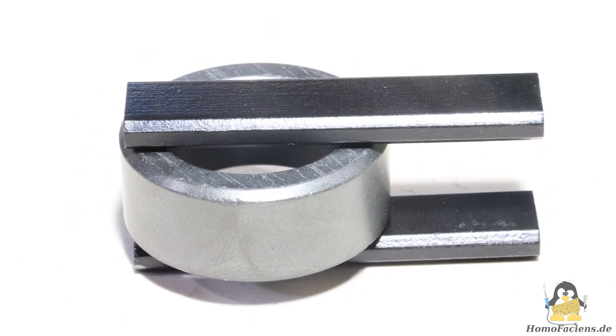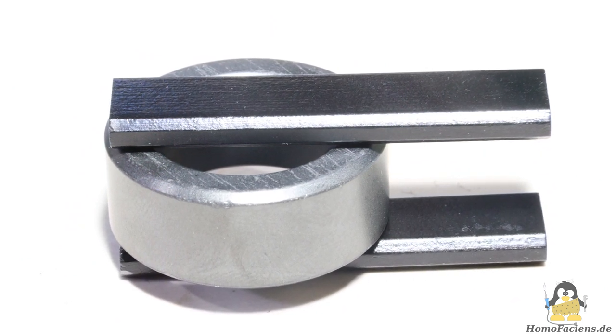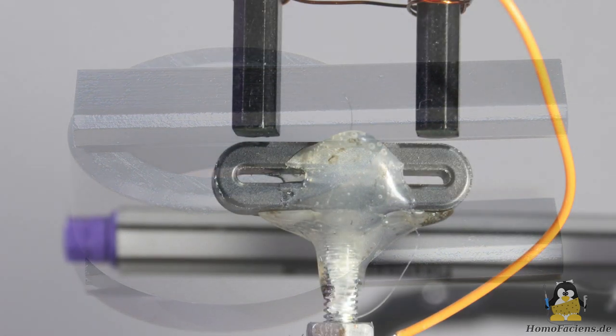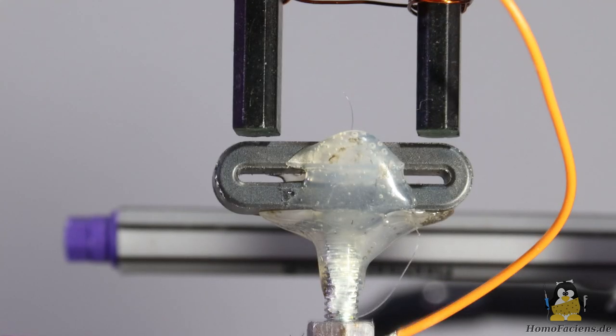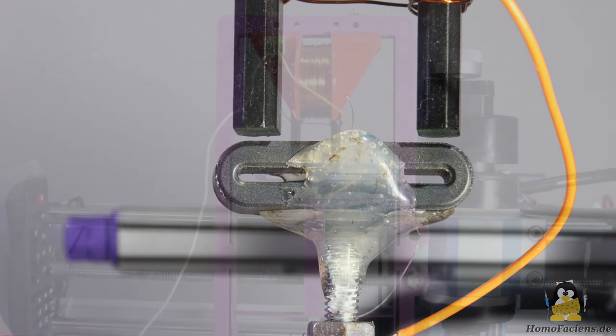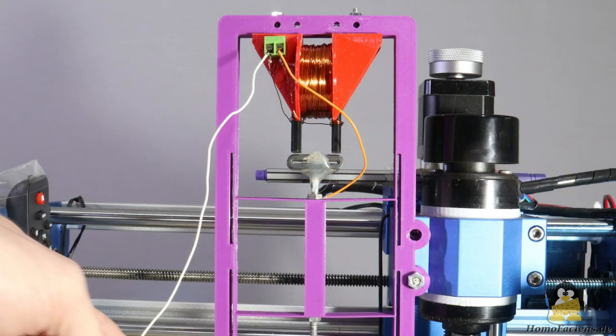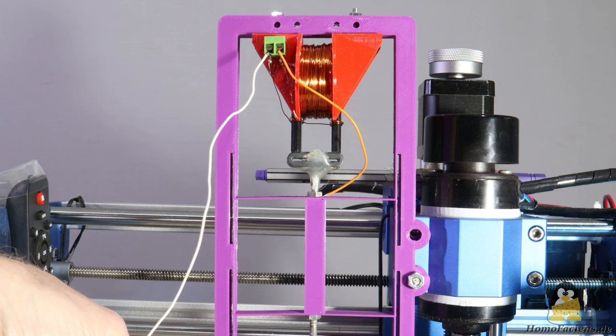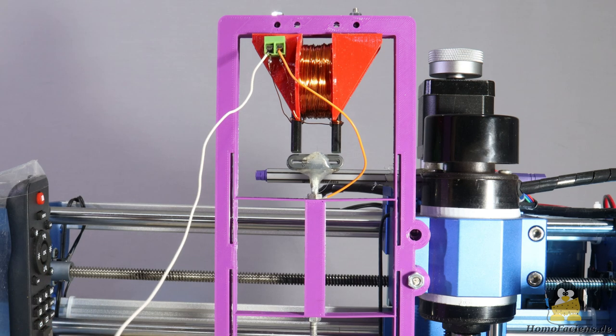The electromagnet now consists of a ferrite core glued together from parts of my scrap box. Another piece of ferrite, which is glued to a 4mm threaded rod, is attracted by the electromagnet. This system works more powerfully and is much more energy efficient than the air coil in the first experimental setup, so no fan is required.